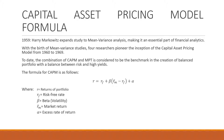The formula for returns in terms of the capital asset pricing model is given in the following slide. The formula states that the expected return of a portfolio, R, is the sum of the risk-free rate, the product of the difference between the market value of the stock and the risk-free rate multiplied by the beta value or volatility, and a rate of return that exceeds the model prediction, or alpha.